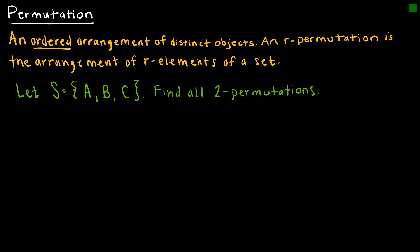A permutation is an ordered arrangement of distinct objects. There are a couple of key words here. Ordered means that the order does make a difference, and distinct means that the elements in the set are not the same.